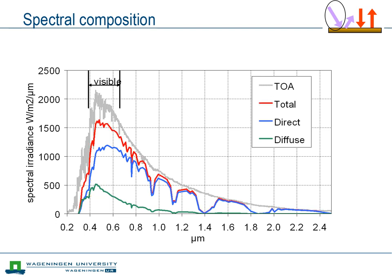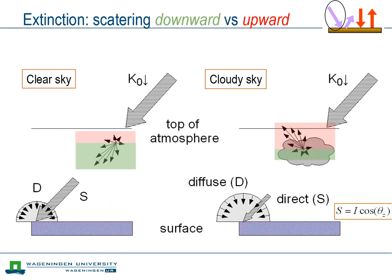Finally, we look at the effect of the atmosphere on the total amount of radiation reaching the surface. We have already seen the signature of absorption, which takes away part of the radiation. But scattering also reduces the total amount of radiation at the surface by changing the direction of a part of the radiation to a direction away from the surface. So radiation that is scattered upwards does not reach the surface.